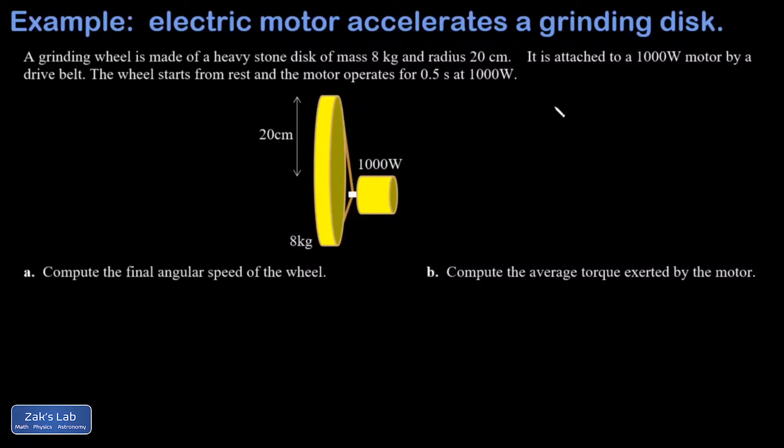In this problem, I have a thousand watt motor. So this is the electric motor right here, and it's spinning a grinding wheel by way of a belt wrapped around a shaft. So the drive belt is actually transmitting this power to the grinding wheel. The grinding wheel starts at rest and the motor operates for half a second.